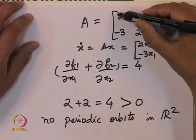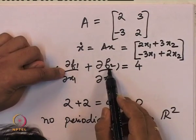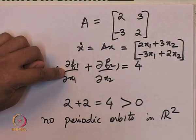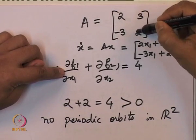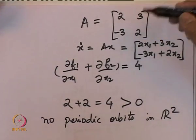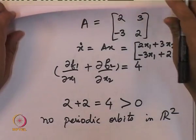When the diagonal entries add up to zero, the Bendixson criteria cannot say whether periodic orbits exist or not. For the Lotka-Volterra predator prey model, showing that there are periodic orbits is a difficult research topic, after which it has been concluded that there is a continuum of periodic orbits for the particular model studied.